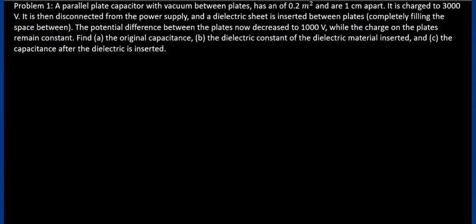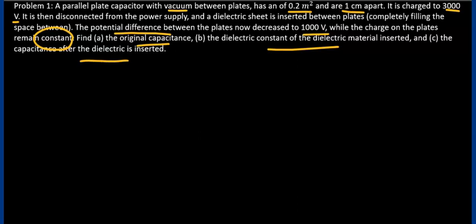A parallel plate capacitor with vacuum between the plates has an area of 0.2 meters squared. These plates are one centimeter apart. It is charged to 3000 volts — that's the potential difference. It is then disconnected from the power supply and a dielectric sheet is inserted between the plates, completely filling the space in between. The potential difference now drops to 1000 volts, while the charge on the plates remains constant. Find the original capacitance, the dielectric constant of the dielectric material, and the capacitance after the dielectric is inserted.